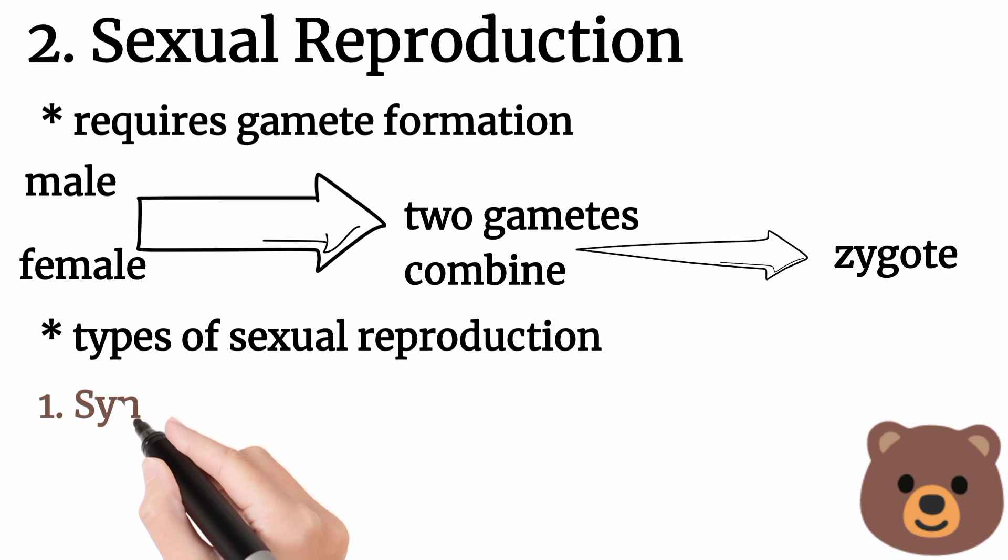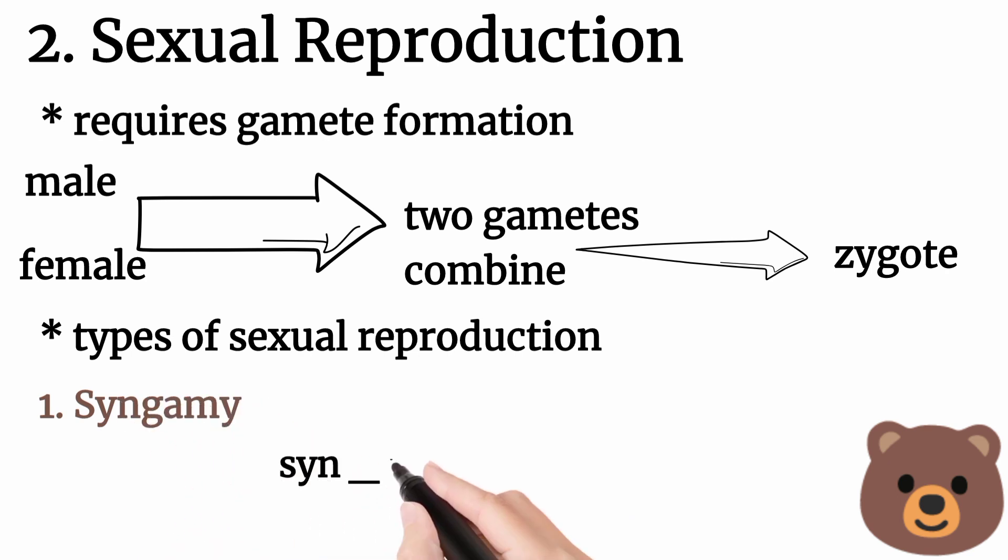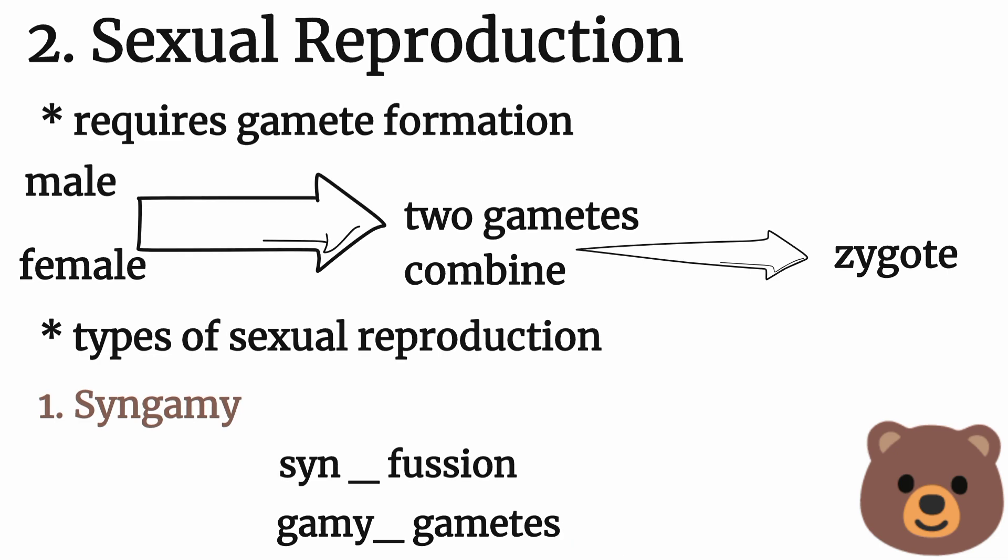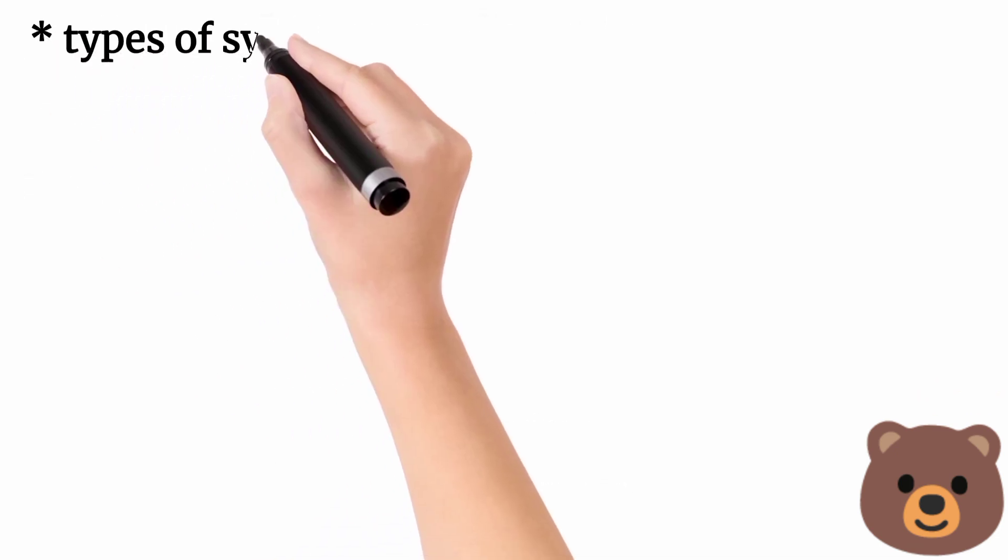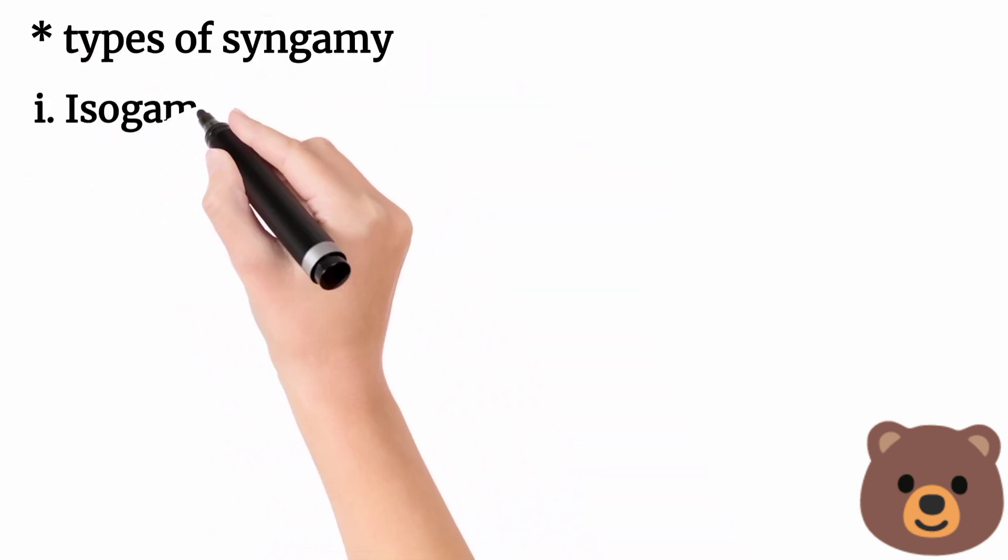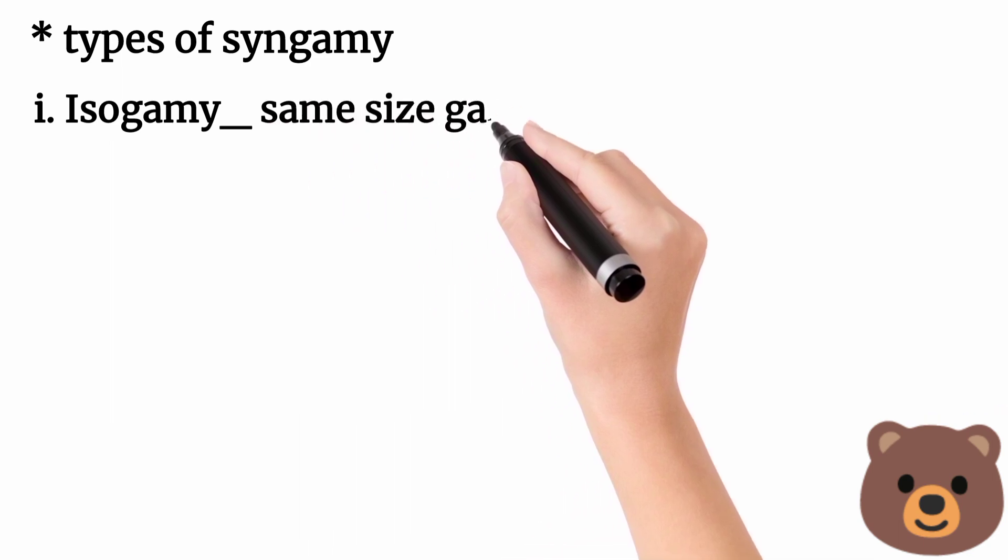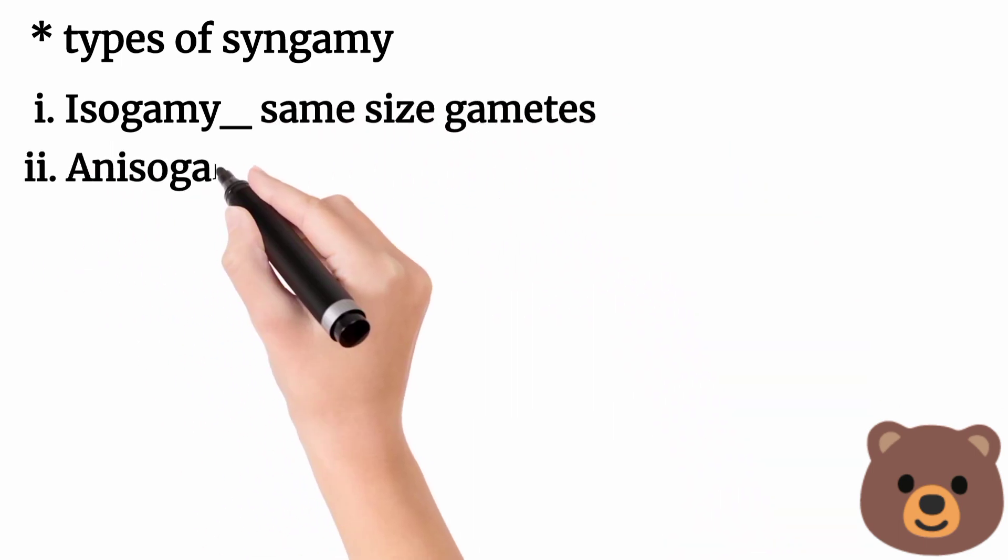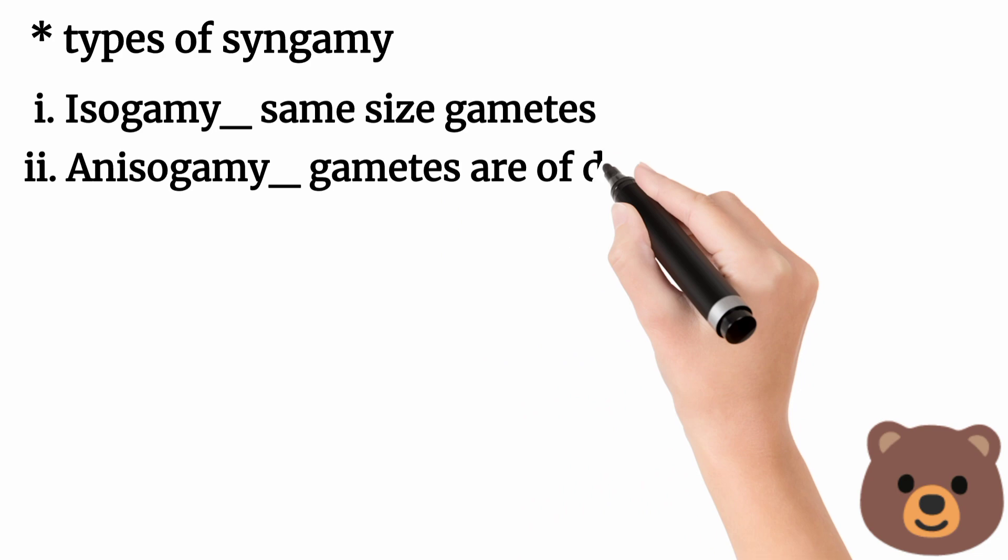Types of syngamy: isogamy means same-size gametes. Anisogamy means gametes are different in size. Macrogamy and microgamy.